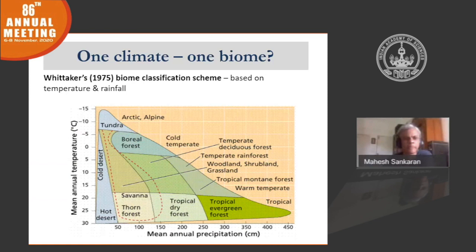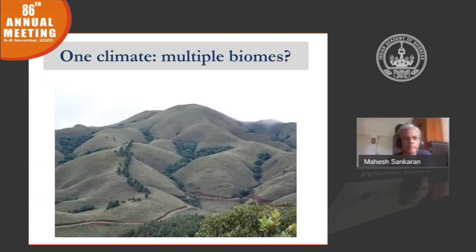I'm going to talk about one such case study, which is the Nilgiri Biosphere Reserve and the Shola grassland mosaics of the upper elevations of the Nilgiris. In the high elevations of the Western Ghats, we have these mountain forest grassland mosaics, also called Shola grassland mosaics, where under the same climate we essentially see two different vegetation types — stunted evergreen forests embedded in a largely grassland matrix. So one climate, multiple biomes.